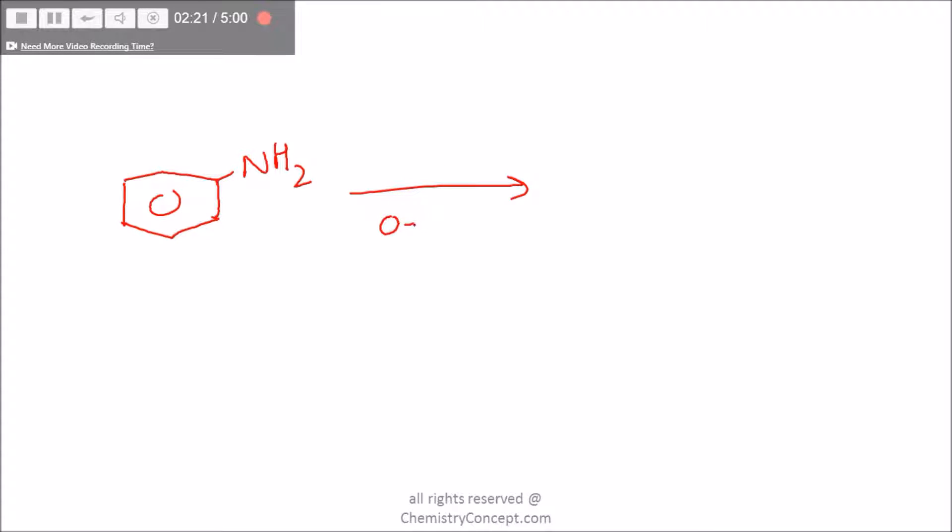At 0 to 5°C with HNO2, and HNO2 is prepared by the reaction of NaNO2 and HCl, we get our diazonium salt N2+Cl-, and this reaction is called diazotization.